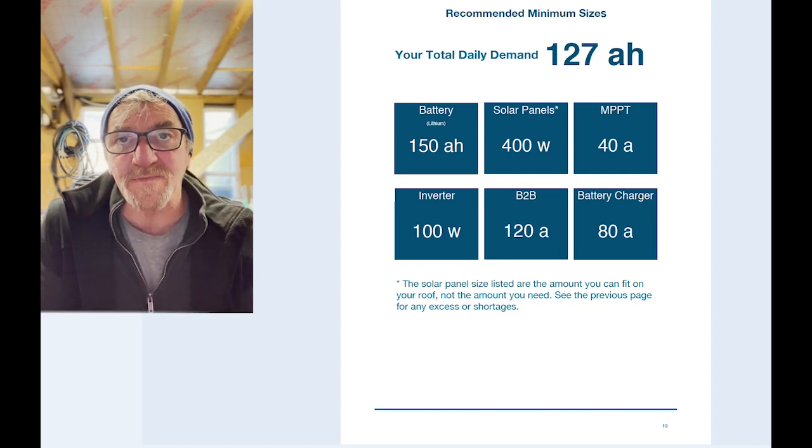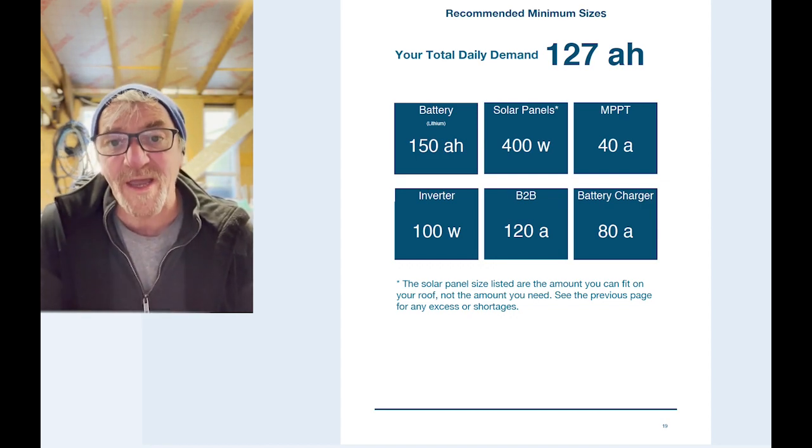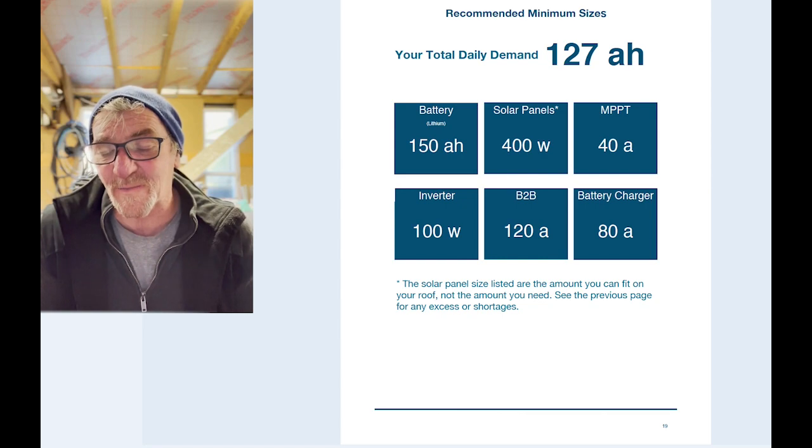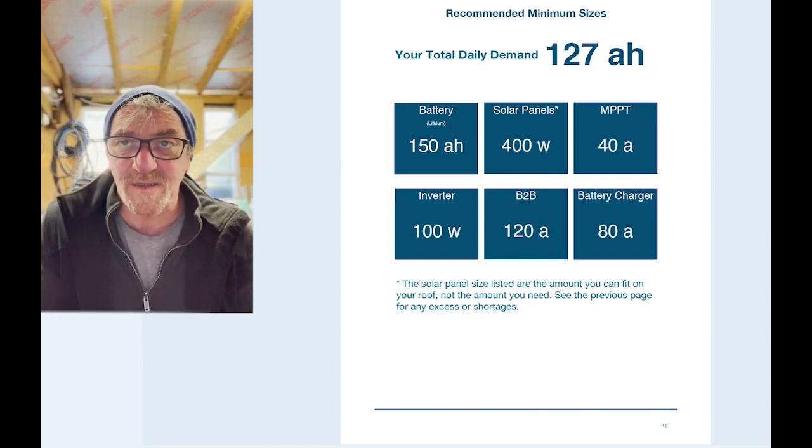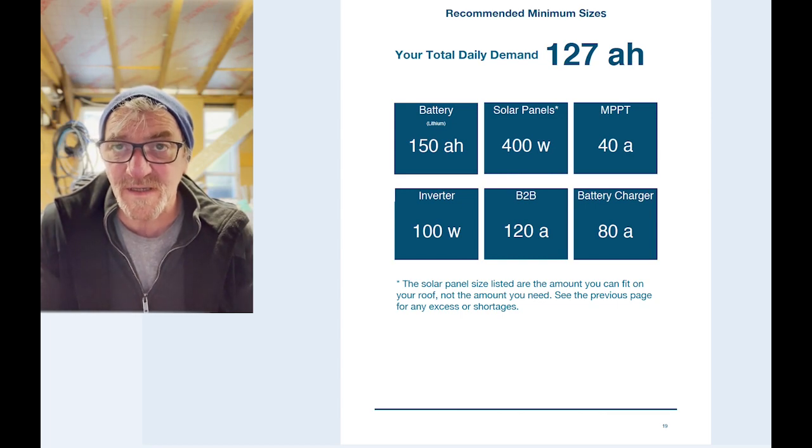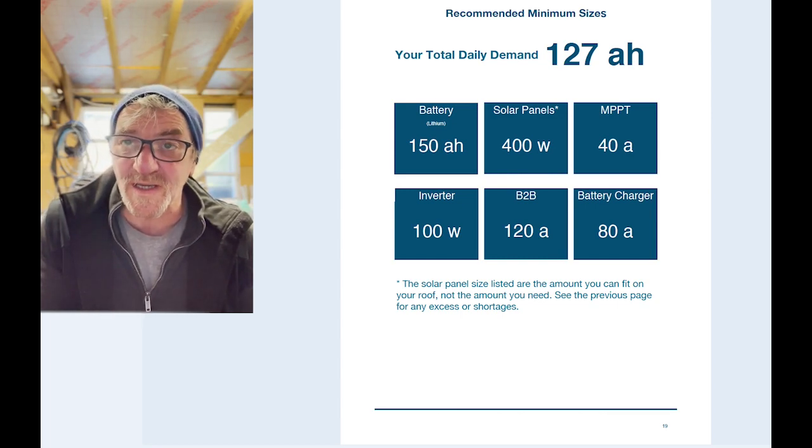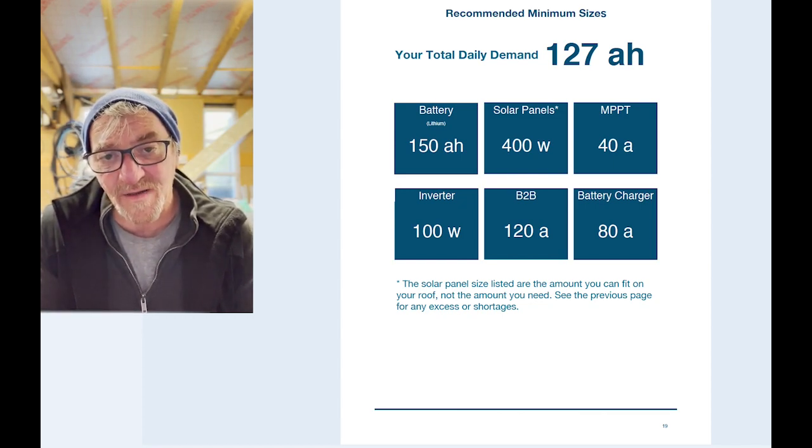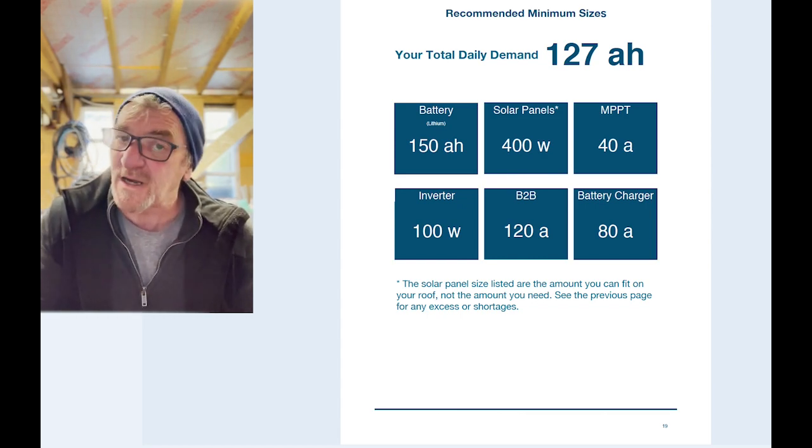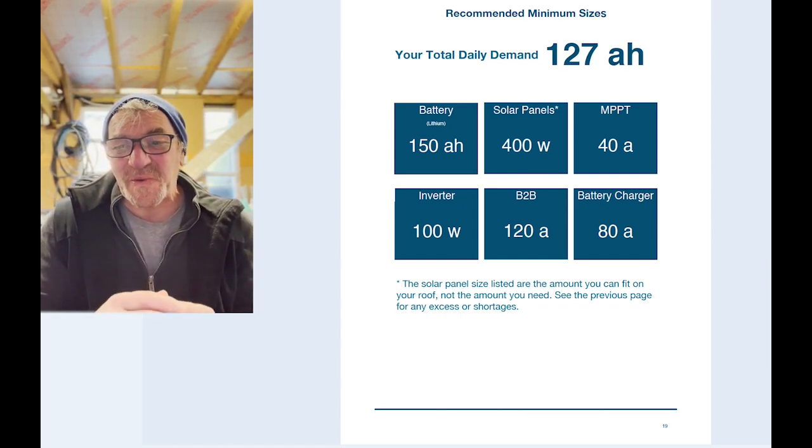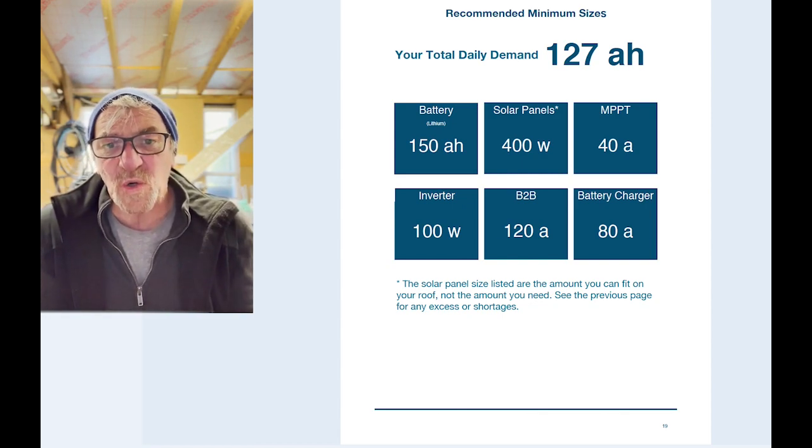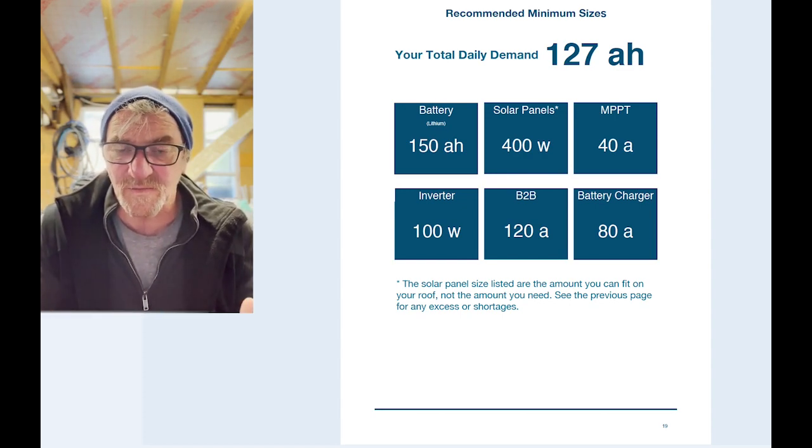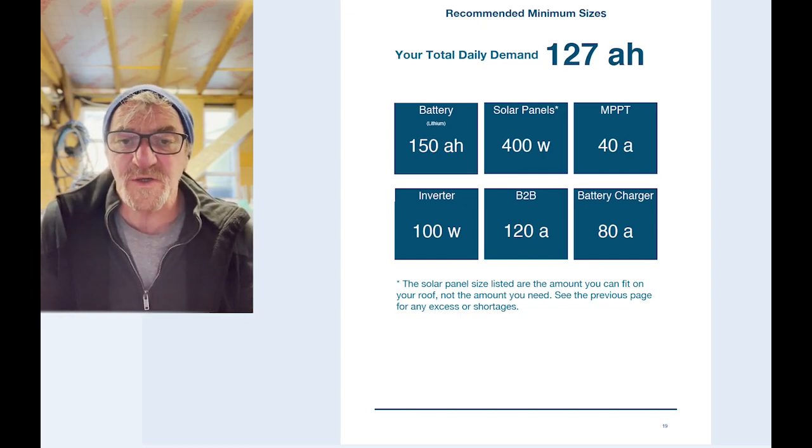So having put it all together, our next bit is about telling us what our recommended sizes for the equipment is. Here I only need 150 amp hours of battery. I've got 400 watts of power. I've said that's what I would do. So my MPPT controller is 40 amps. I only need a 100 watt inverter. My B2B could be 120 amps and my battery charger should be 80 amps too. Again, these are based on the battery types that I have chosen. But life isn't like that. So we have kits already, particularly if you're doing an upgrade, or we want particular types of kit, or things have just changed and we want to build in some future proofing in the design.